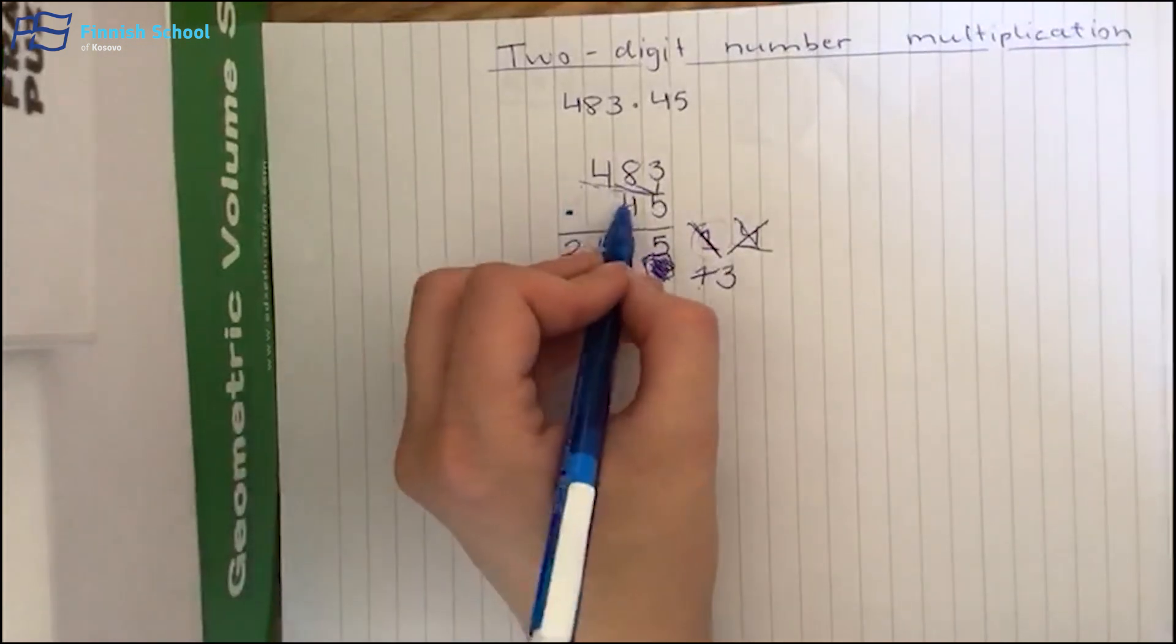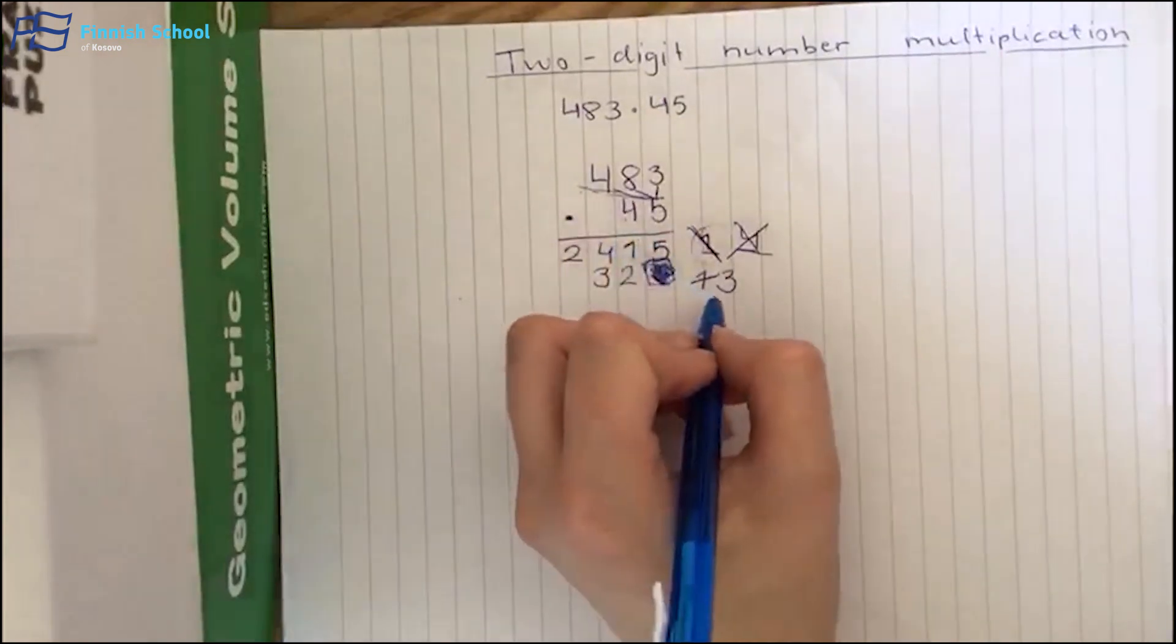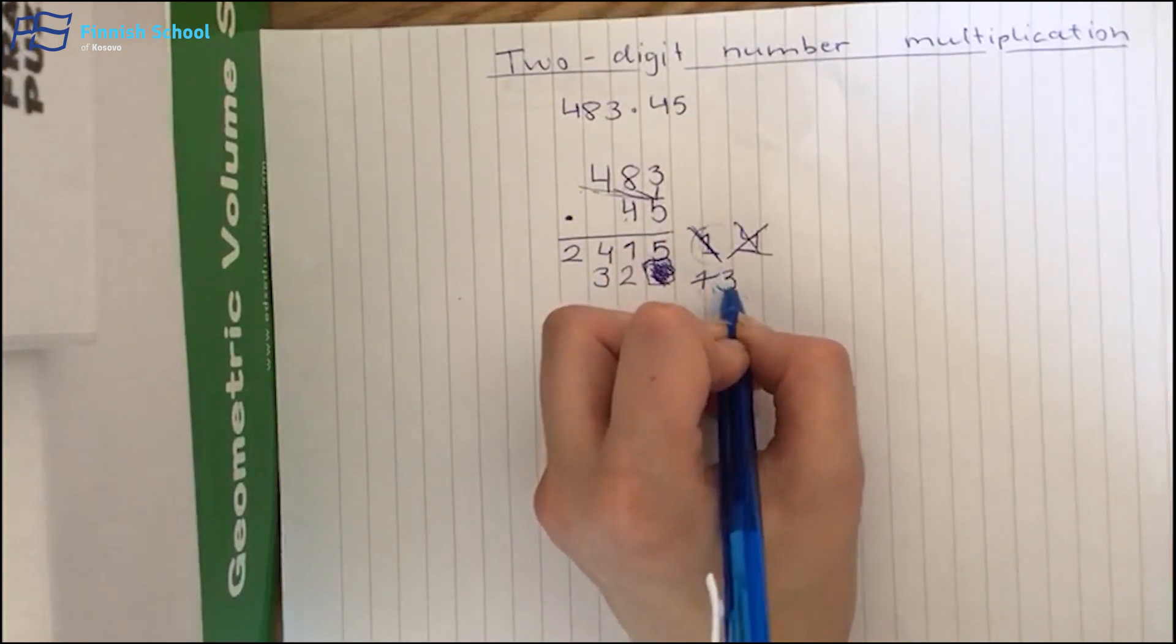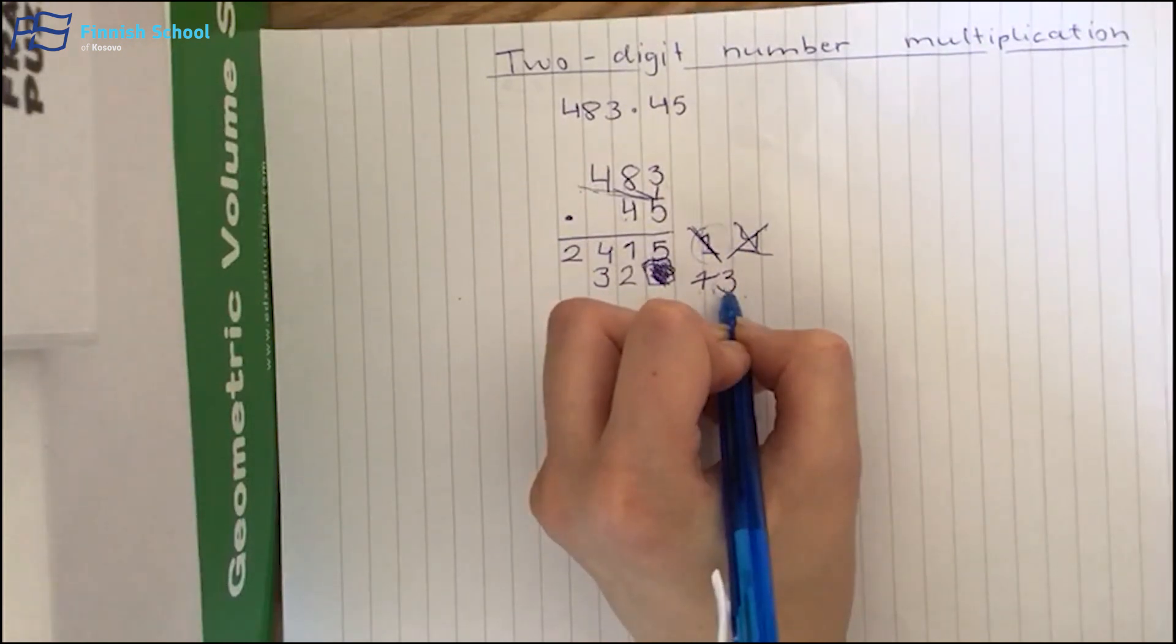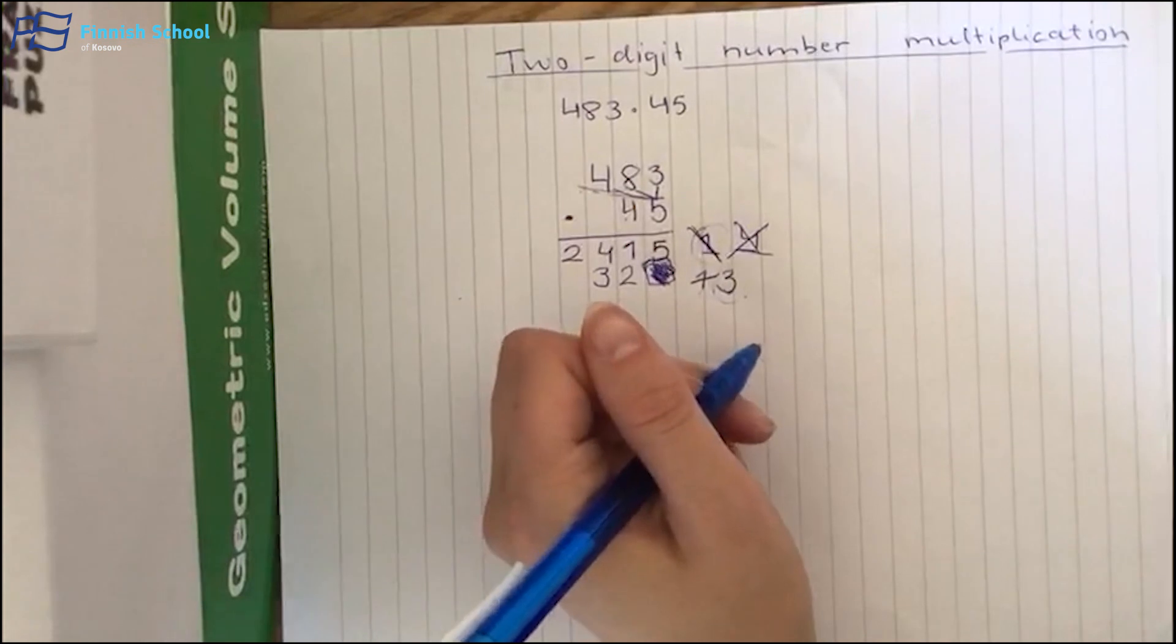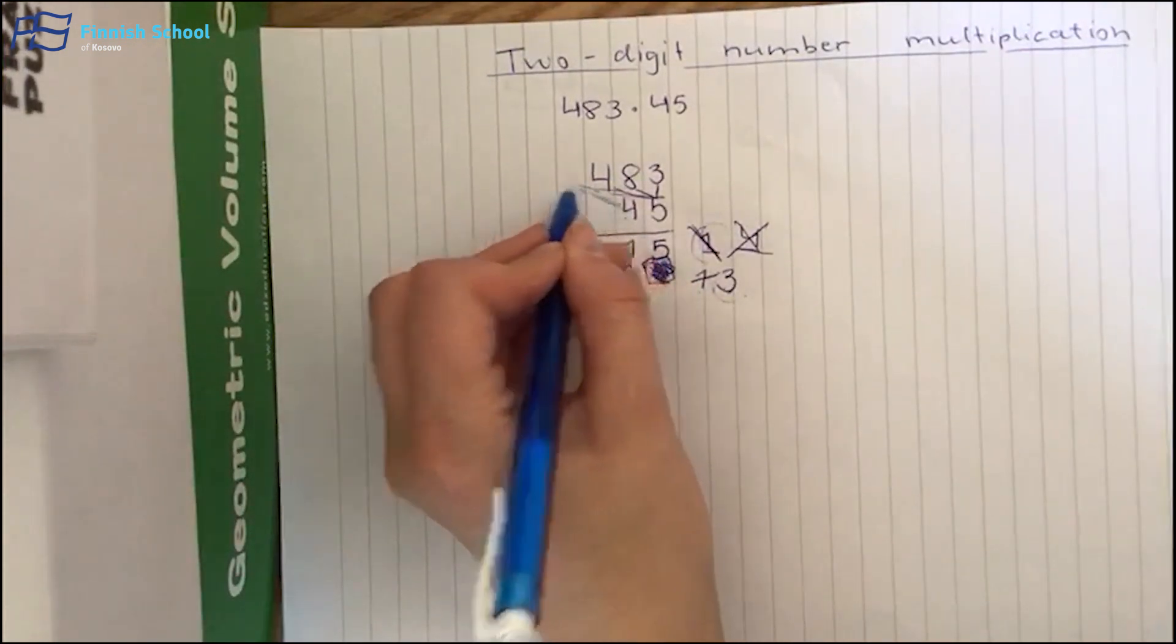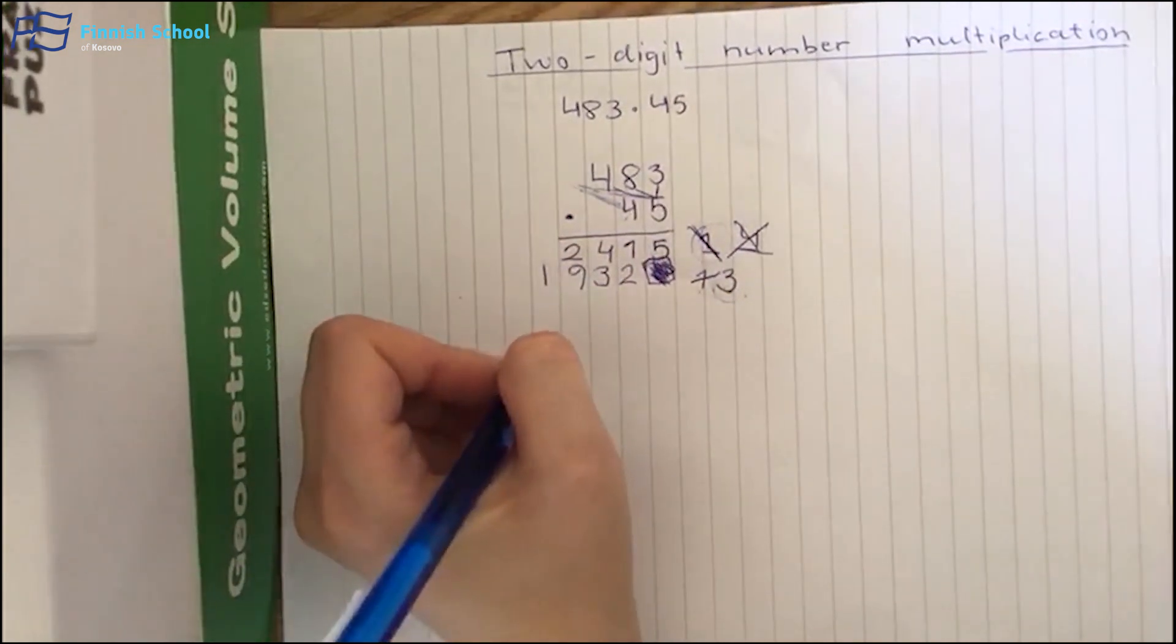And now 4 times 4, it's 16. But now we have to remember to take number 3. So 16 plus 3 is 19. And again, because it was the last number that we have to multiply, we can put 19 here.